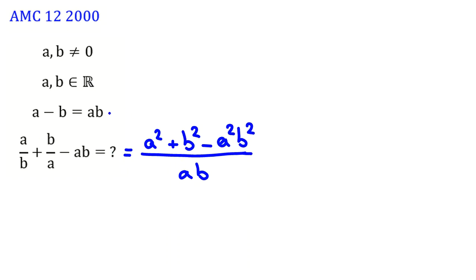Because we see this, we raise both sides of the assumption to the power of 2 and we use this identity. A minus B squared is A squared plus B squared minus 2AB. The right-hand side will be A squared B squared.